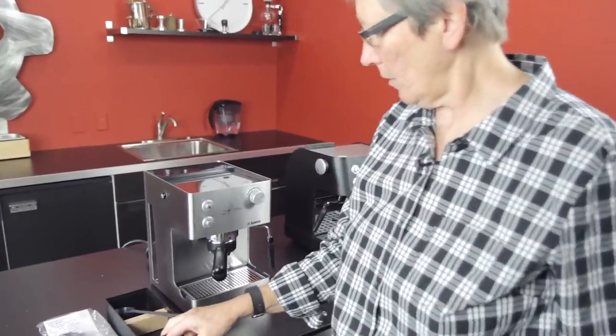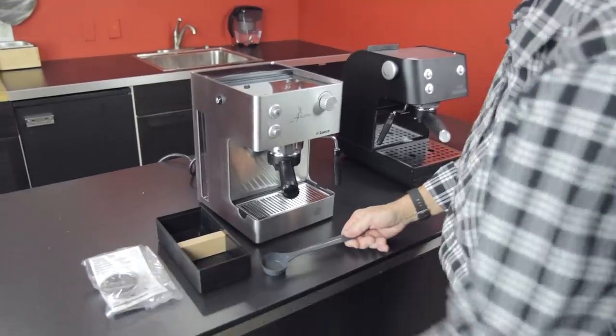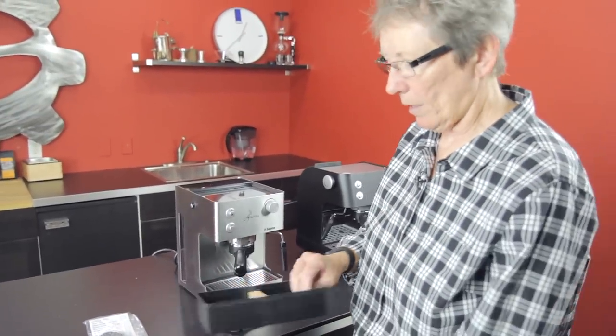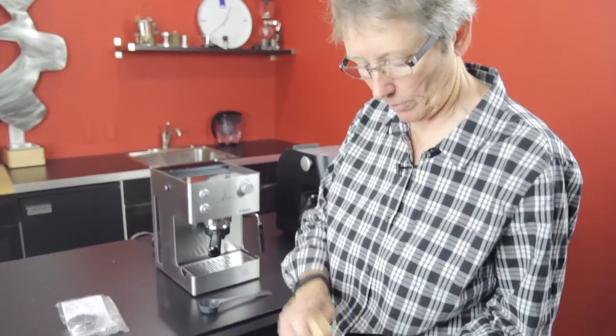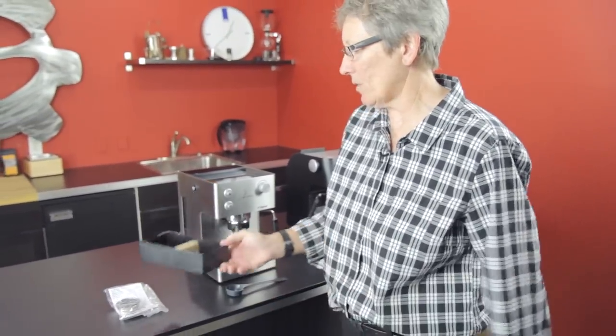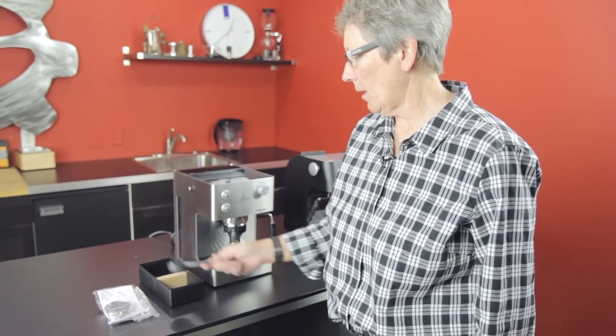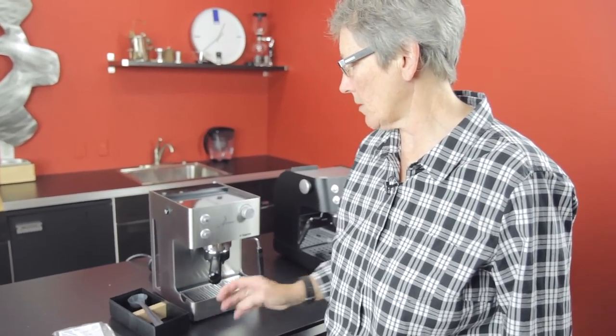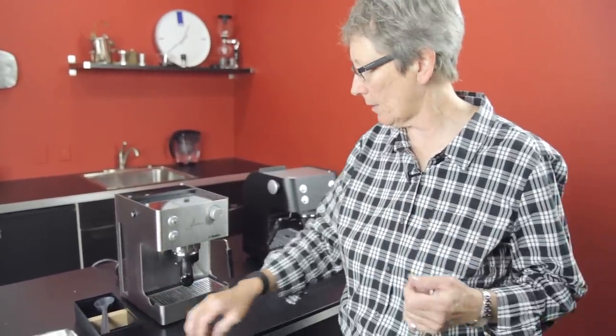And the Aroma comes with the scoop, the ESE pod adapter, and this is supposed to be a knockbox. Wooden bar that comes out. I would not use that for a knockbox myself. I think it's a little bit eh. You really have to bang these pressurized systems, because you get more of a slurry than a good, firm puck. So you'd be banging quite a bit to get it out of there.